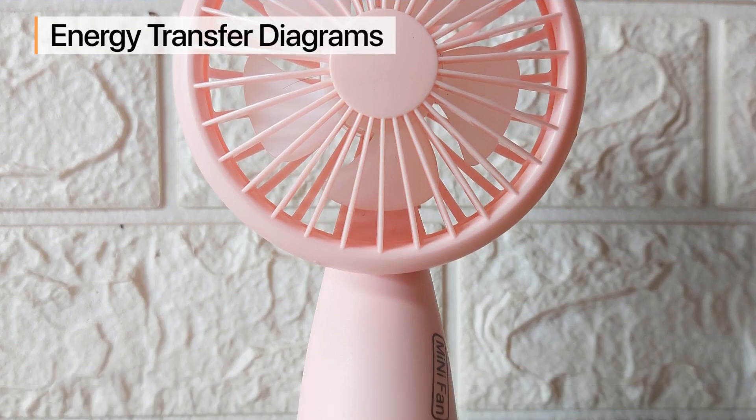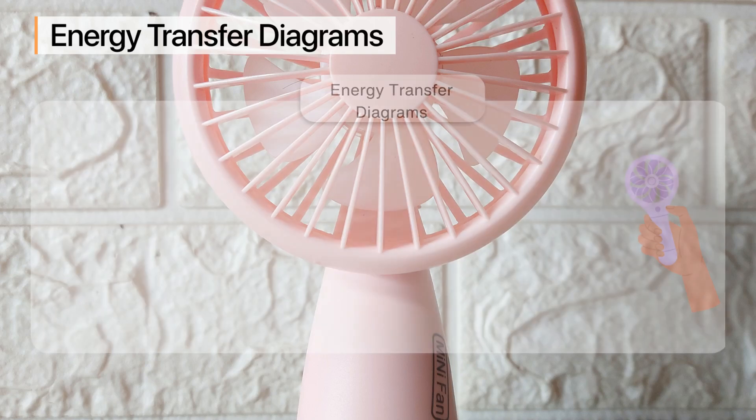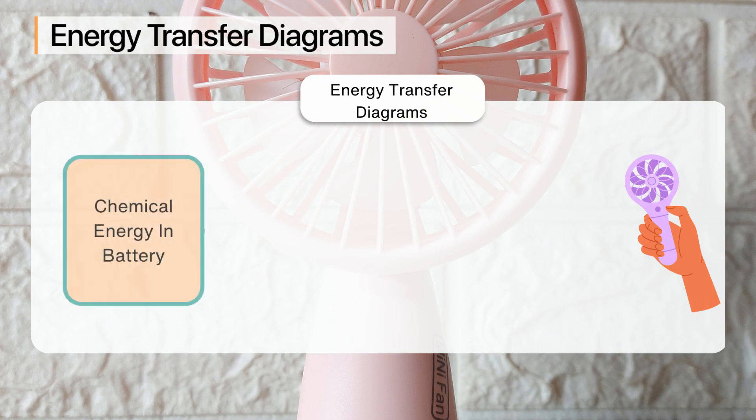Let's now explore how energy transfer diagrams work using the example of a battery-powered electric fan. Initially, the fan is off and all the energy is stored as chemical energy within the battery.